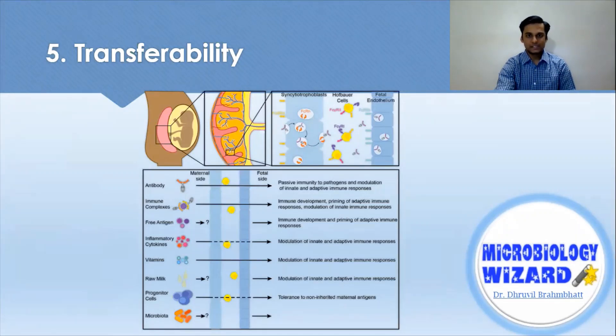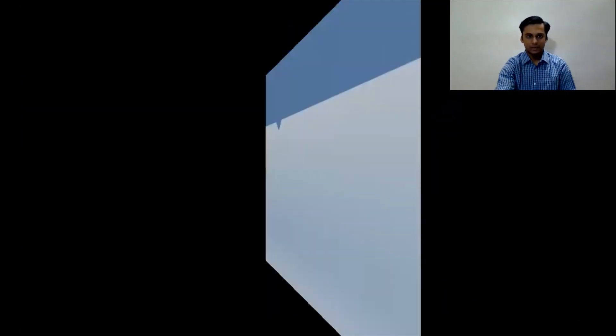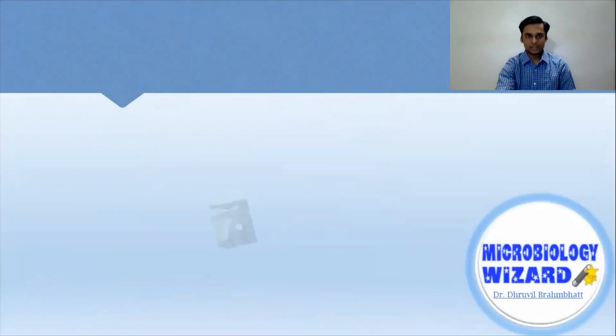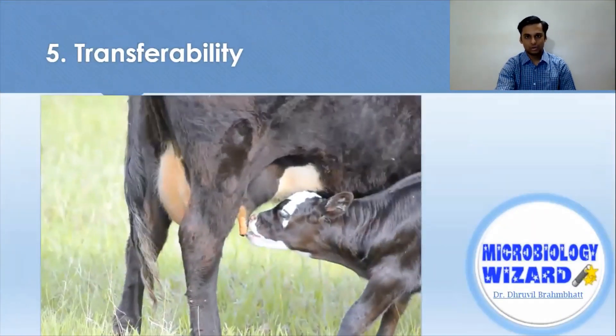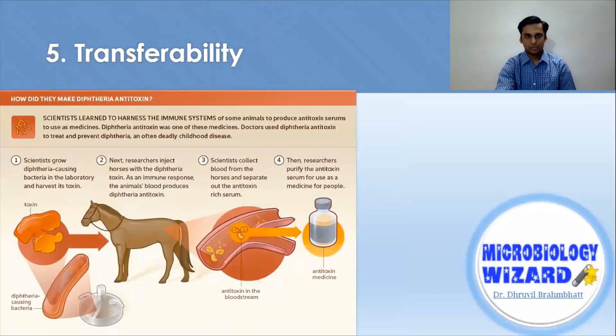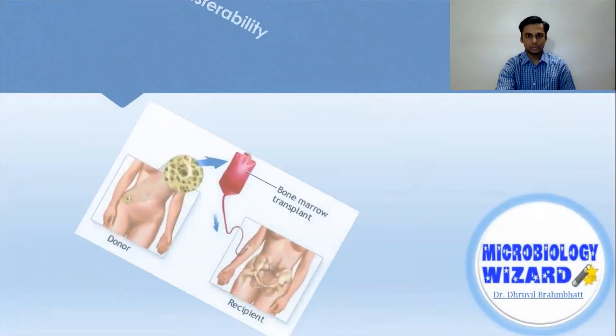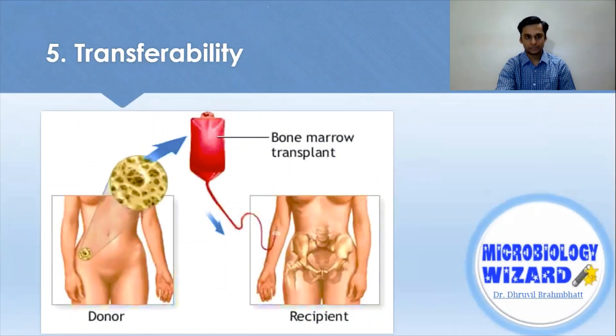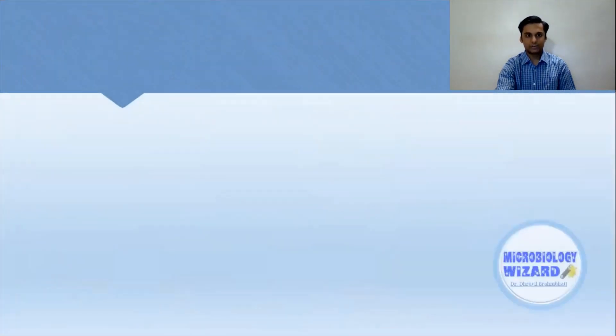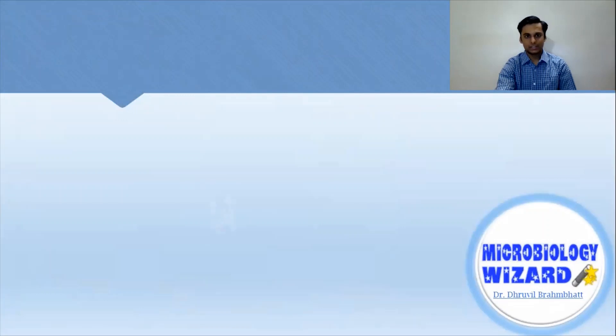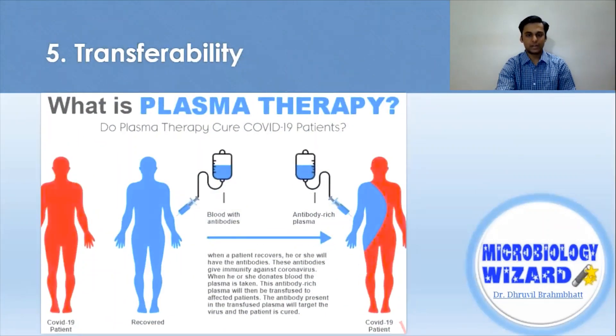A common example is antibodies from mother to fetus through placenta. Another common example is feeding the newborn colostrum. Another example would be diphtheria antitoxin produced from horse given to humans, or bone marrow transplant to an immunodeficient person. And of course, how can we forget the latest trend, which is the plasma therapy for COVID-19 patients.